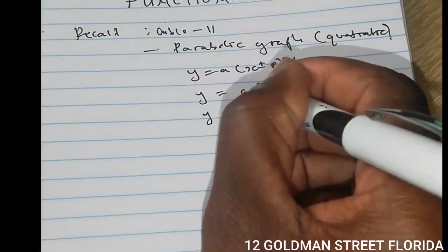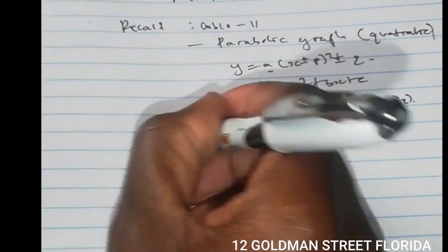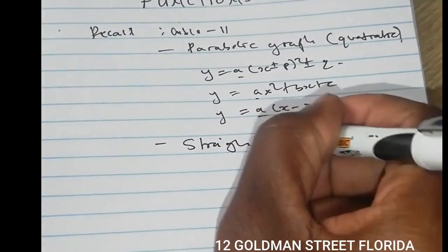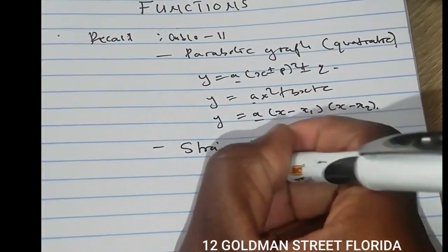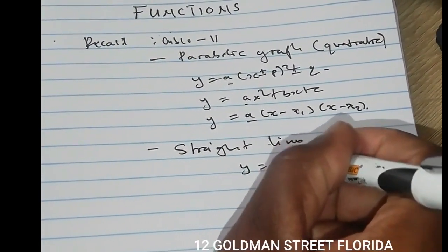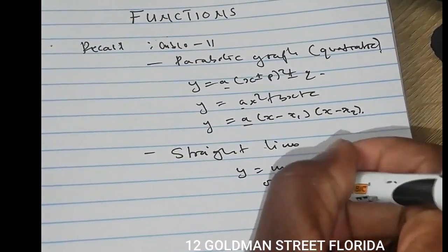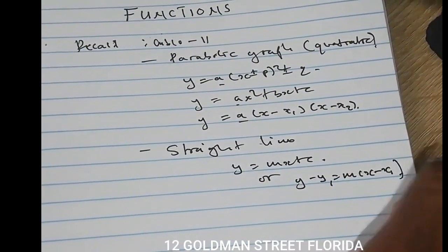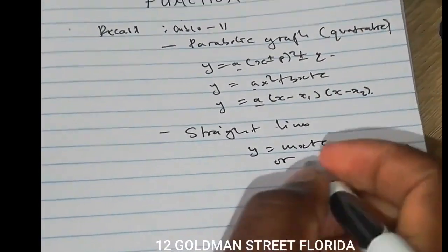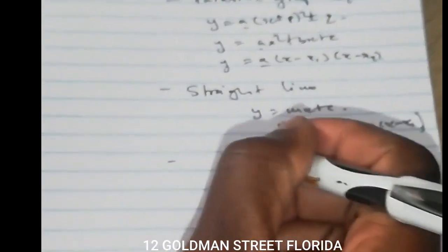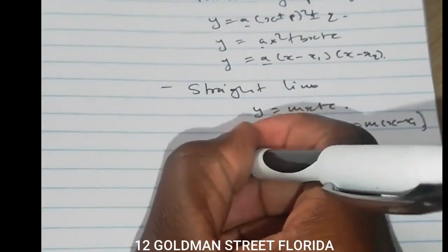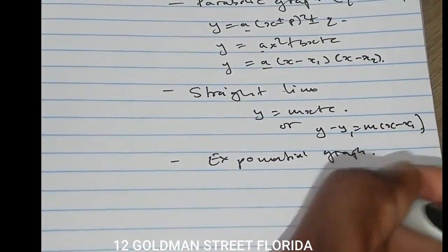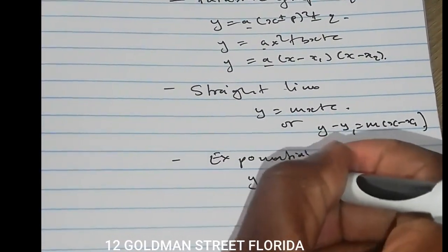The shape of the parabola is determined by the value of a. We also looked at the straight line graph, given by y = mx + c, or y - y₁ = m(x - x₁). Thirdly, we looked at the exponential graph.